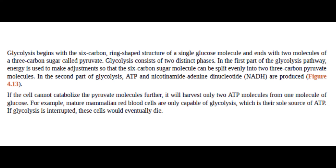Glycolysis consists of two distinct phases. In the first part of the glycolysis pathway, energy is used to make adjustments so that the 6-carbon sugar molecule can be split evenly into two 3-carbon pyruvate molecules. In the second part of glycolysis, ATP and nicotinamide adenine dinucleotide, NADH, are produced. If the cell cannot catalyze the pyruvate molecules further, it will harvest only two ATP molecules from one molecule of glucose. For example, mature mammalian red blood cells are only capable of glycolysis, which is their sole source of ATP. If glycolysis is interrupted, these cells would eventually die.